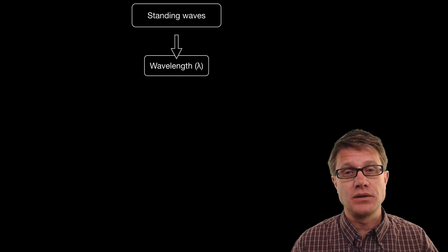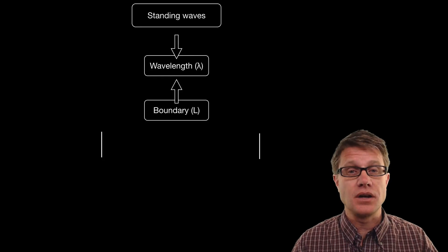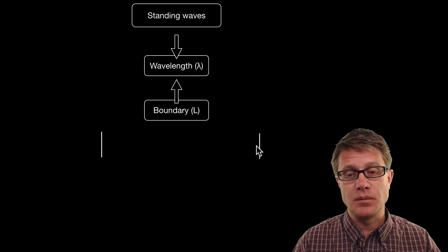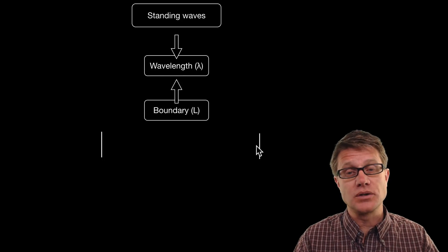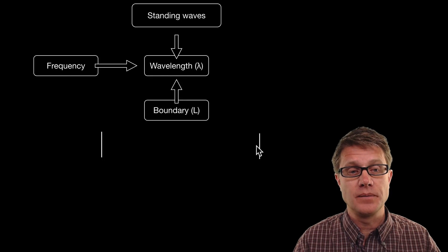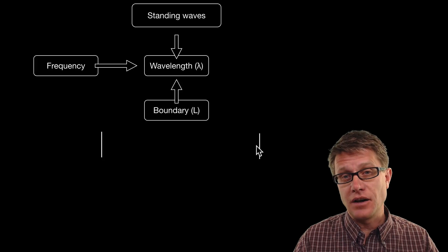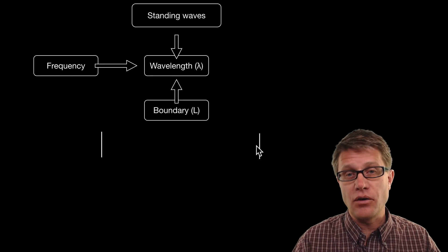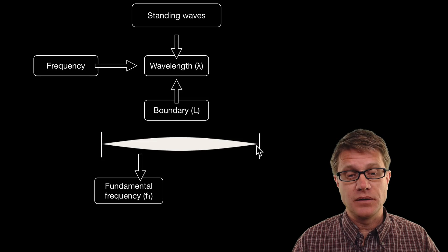The wavelength of standing waves is determined by two things. First of all it is determined by the boundary — in other words the ends of the string. If we are talking about a guitar it could be the ends of a tuba if we're talking about a wind instrument. Frequency is the other thing that can affect the wavelength — in other words how fast we are vibrating the air inside it.